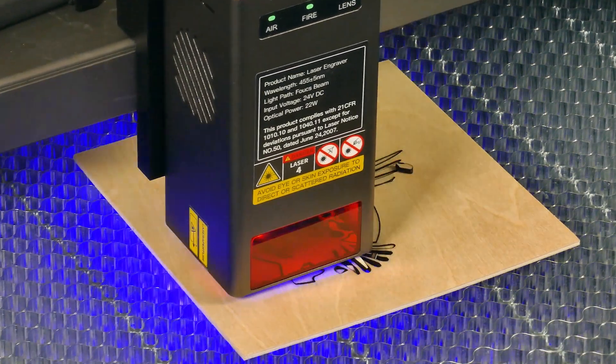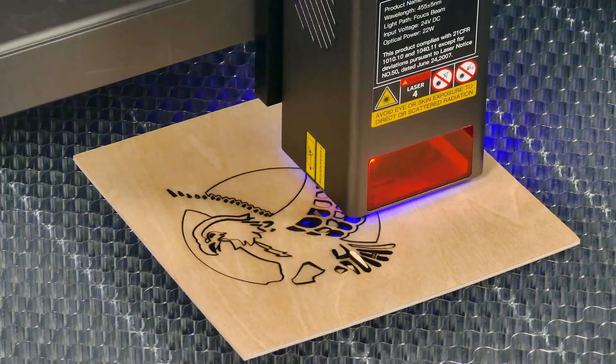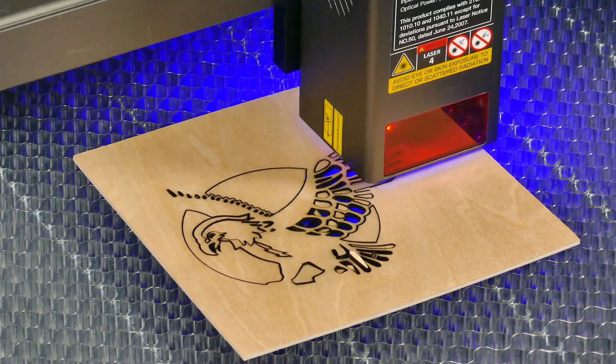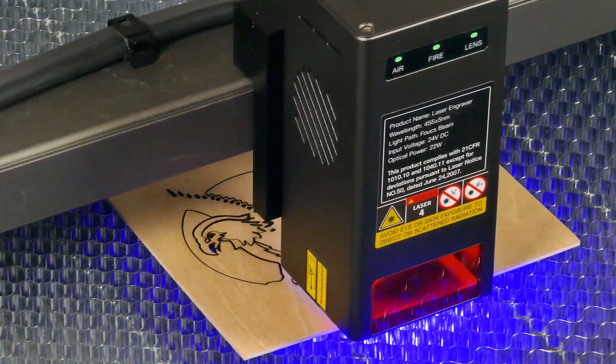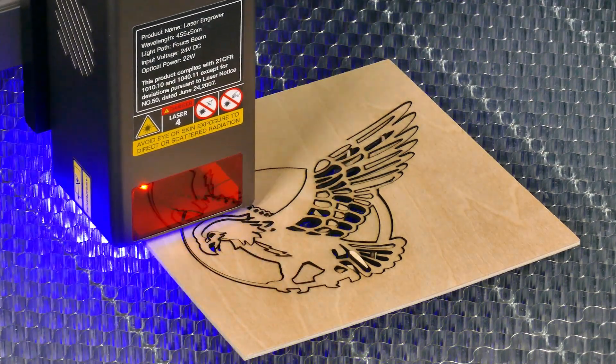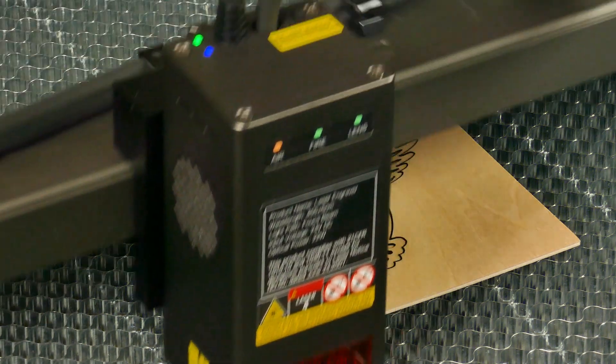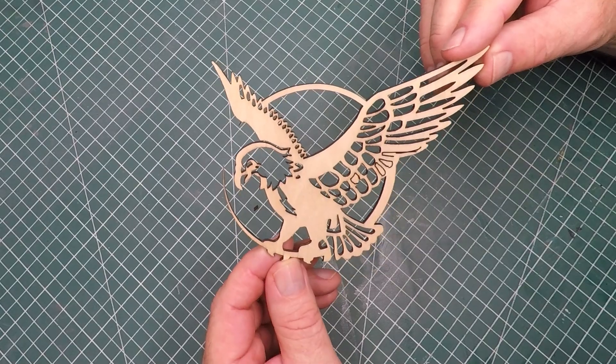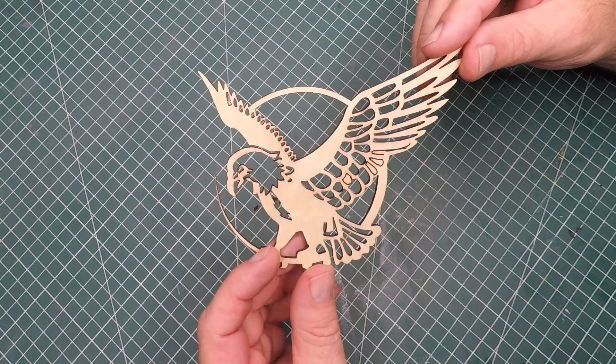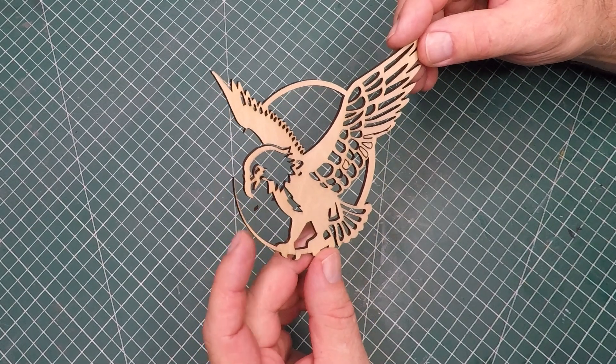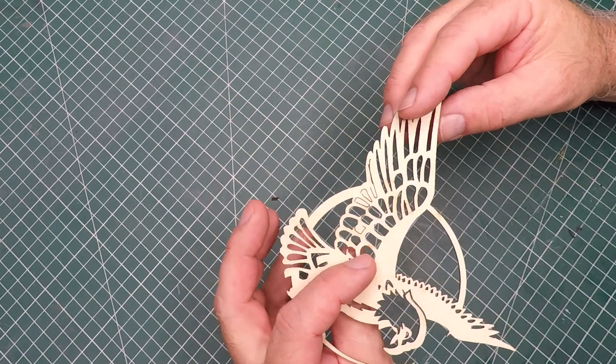You can see the air assist doing what it's supposed to do. It's blowing the smoke away and also some of the finer pieces it's just blowing to the bottom of the honeycomb. The biggest surprise for me was everything actually worked first go. That never happens with me. Now this eagle took less than five minutes to cut out. This was two millimeter base wood and it was very quick to cut it out. And there it is, look how fine that is. So fine that I broke a piece off when I picked it up. Very impressed with the quality of this and equally impressed on how easy it was to get my first cut out.